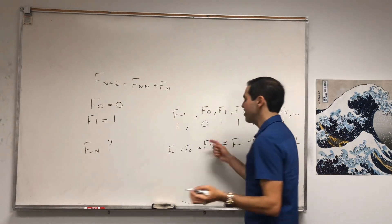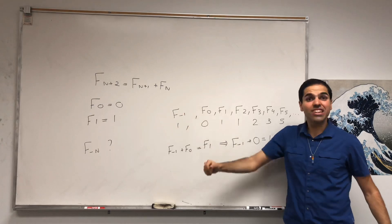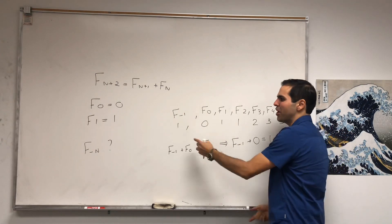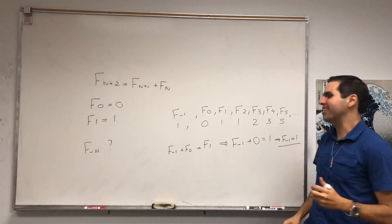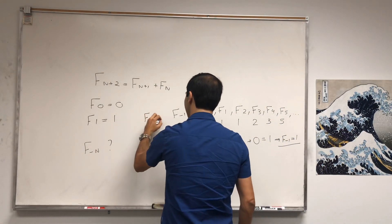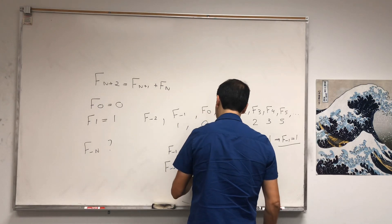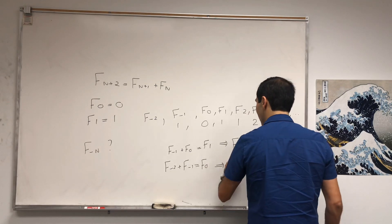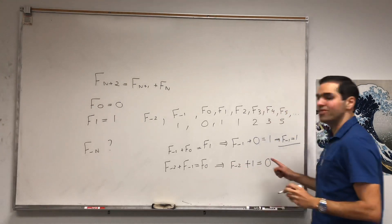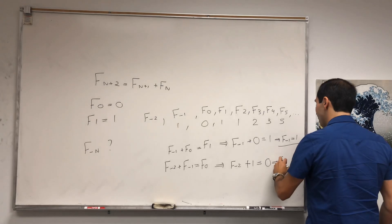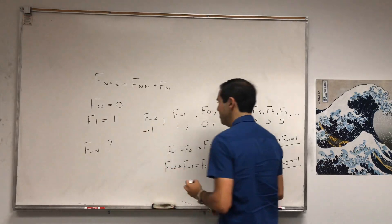Interestingly, you might think you get a negative answer, but no — it turns out the number of bunnies a generation before is positive. So somehow, one bunny later becomes 0 bunnies, and then we get another bunny later. And the question is, what is F of negative 2? Well, F of negative 2 plus F of negative 1 equals F naught, so F of negative 2 plus 1 equals 0, which tells us F of negative 2 is minus 1. So indeed, here we get a negative bunny.